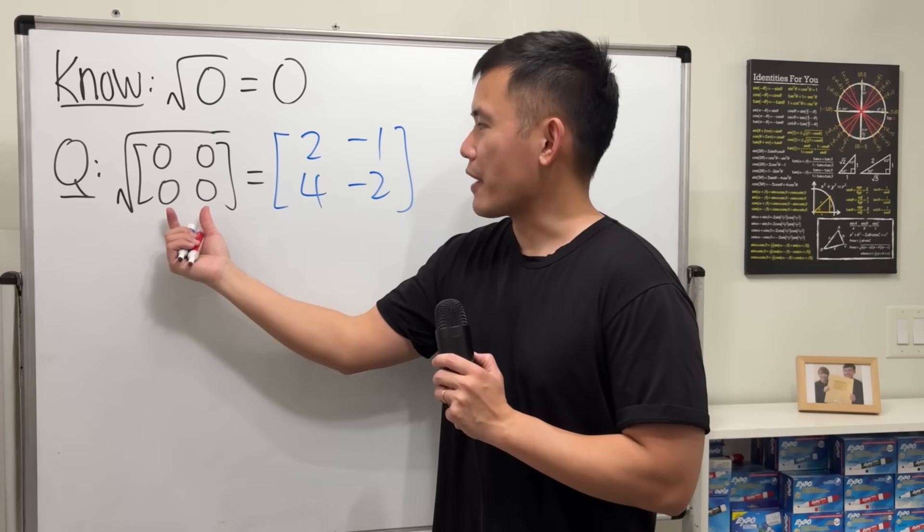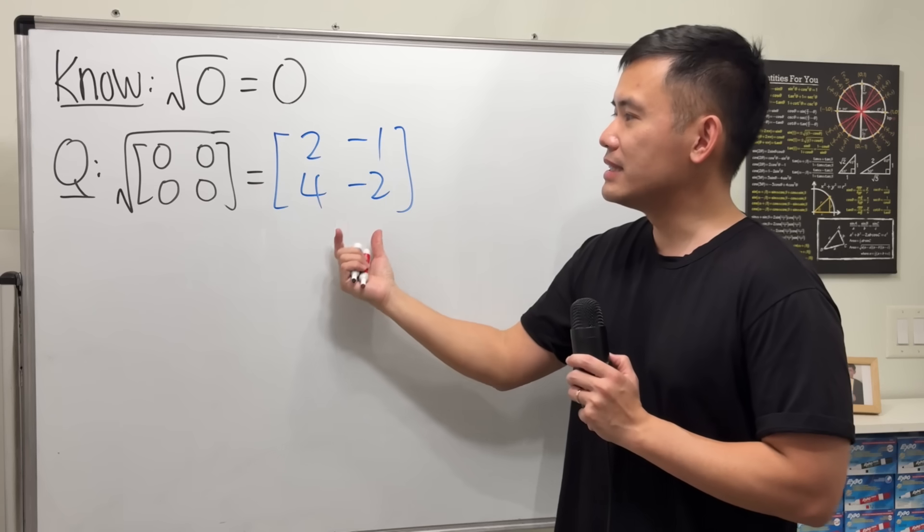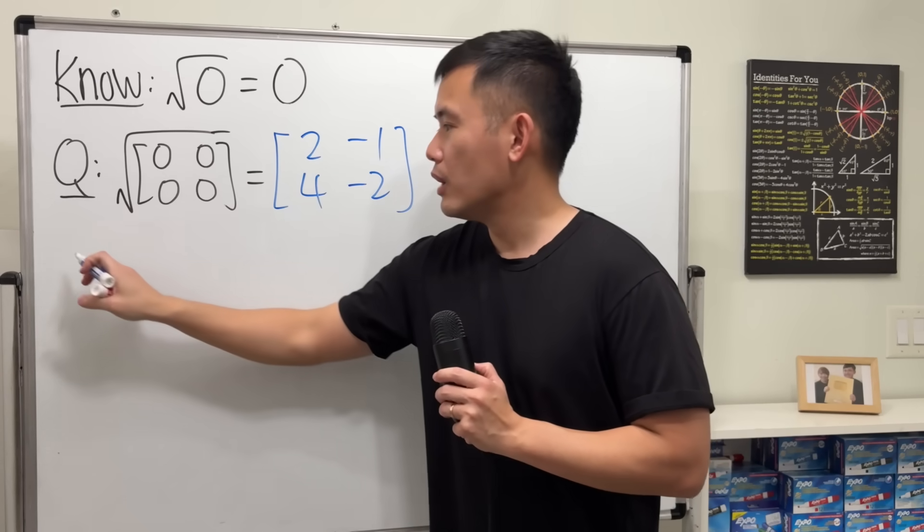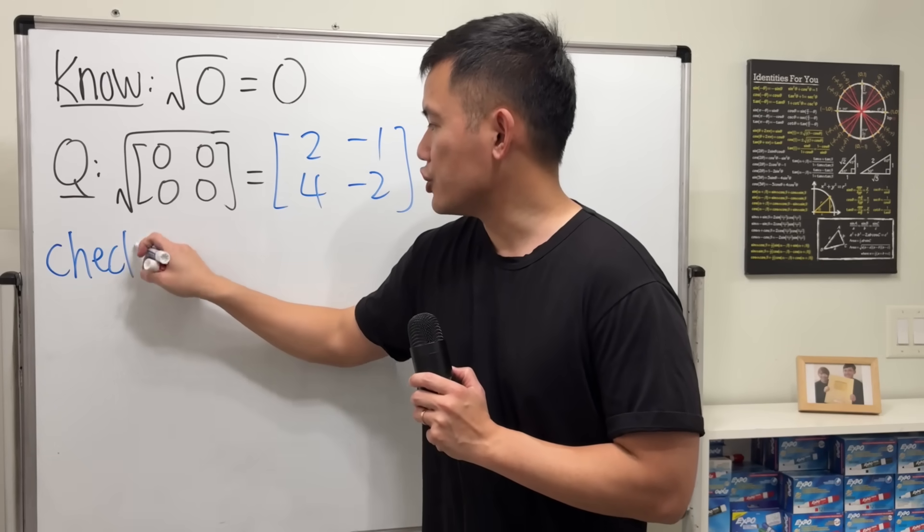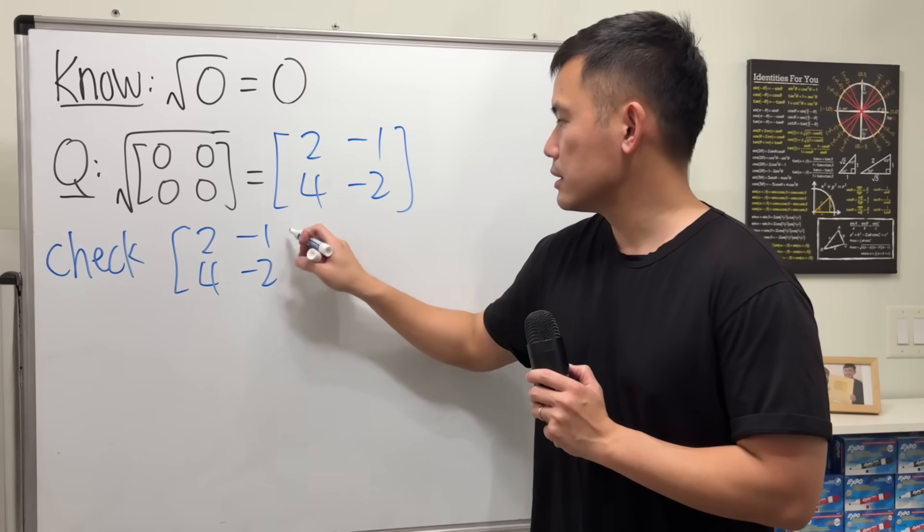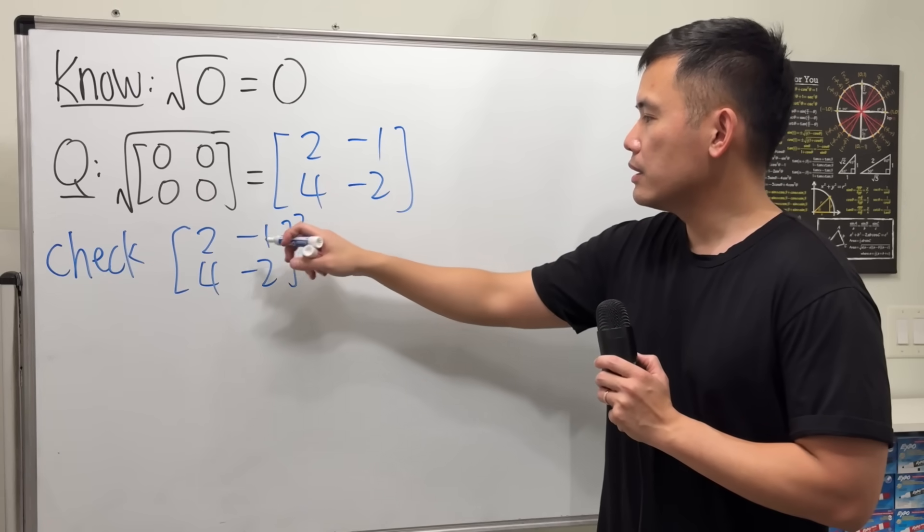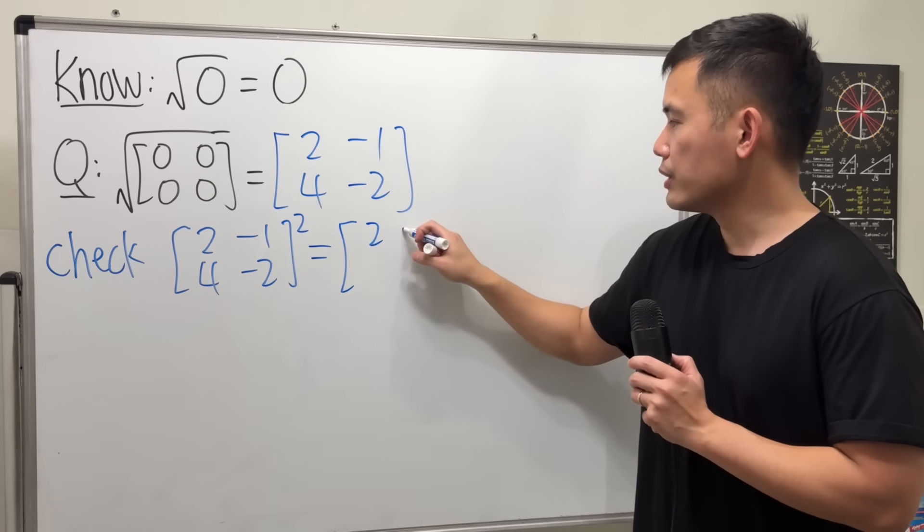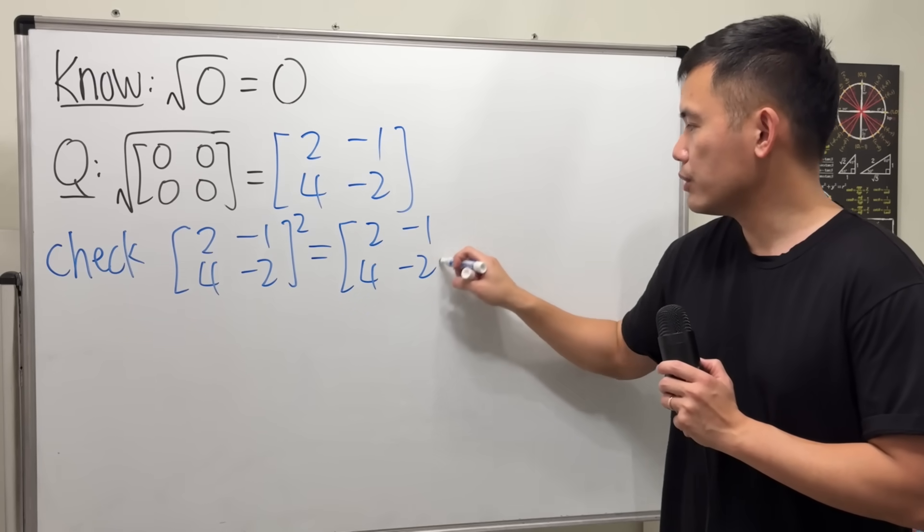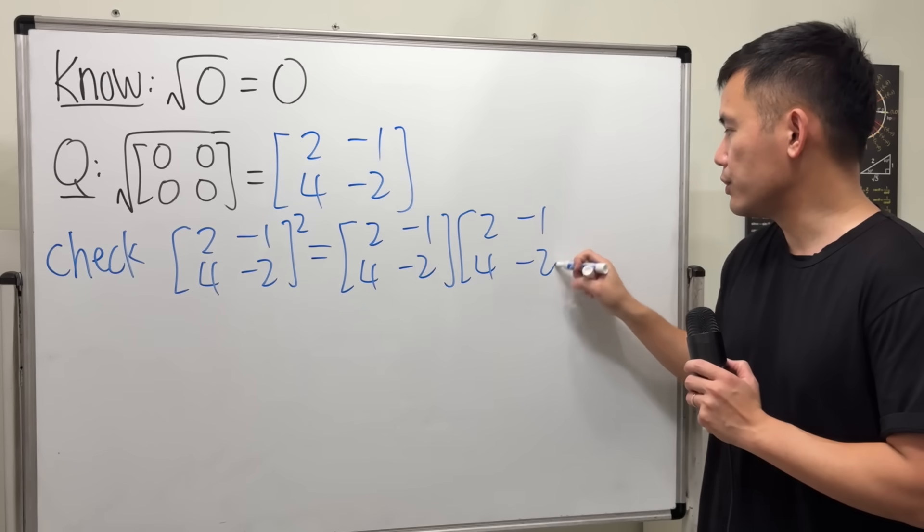So when we take the square root of something equals the result, we will just have to square the result and see if we can get the inside. Right here, let's go ahead and check if we square this matrix, do we end up with the 0's matrix? This means we have to do [2, -1; 4, -2] times [2, -1; 4, -2].